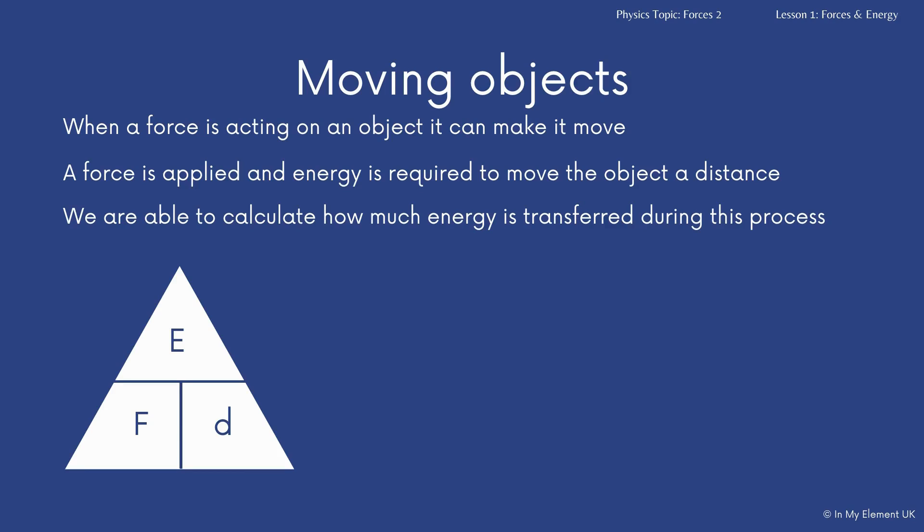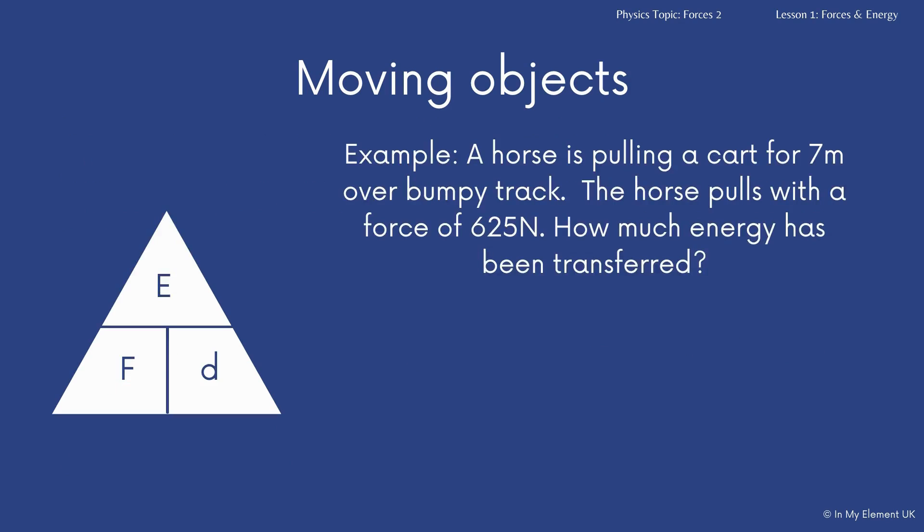We've got a formula triangle here for you with the three letters representing the different areas we're going to use. So F representing force, E representing energy transferred and D representing distance. And in this case, the energy transferred is equal to the force multiplied by the distance. Now, as with all formula triangles, you can rewrite them so that no matter which two pieces of information you are given, you can calculate the third.